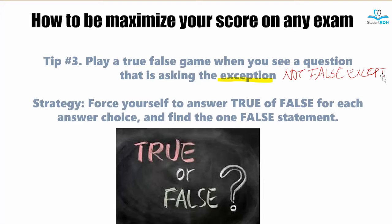This is because our brain is trained to detect the correct answer. If you think about any exam, about 75% of questions are built with a statement asking you to choose the correct answer — 'which of the following is true.' But exception questions are the reverse, and because 75% of the questions are like that, your brain gets tricked sometimes.